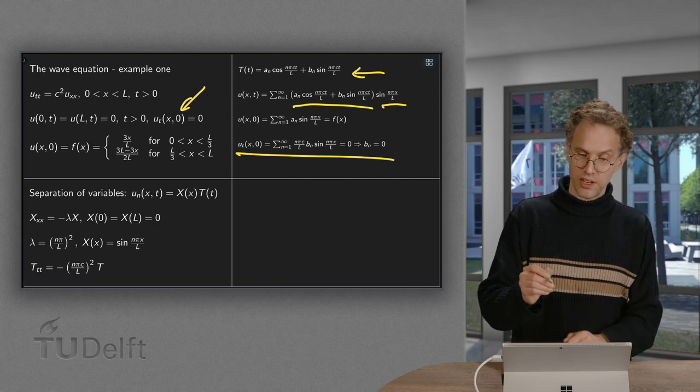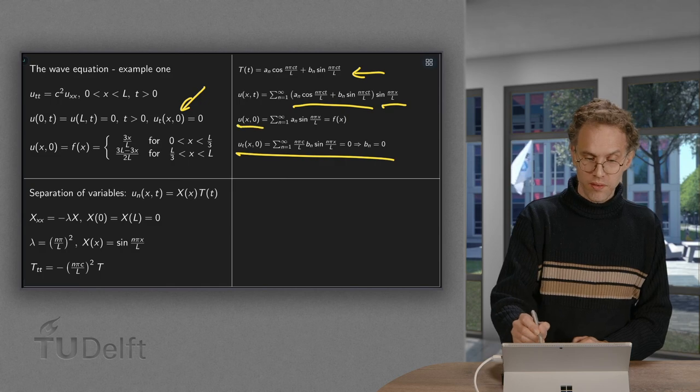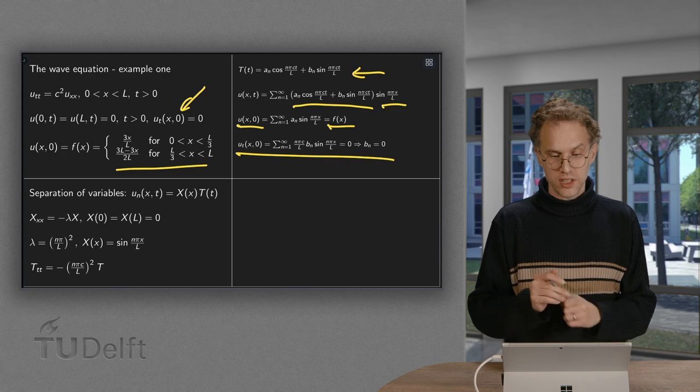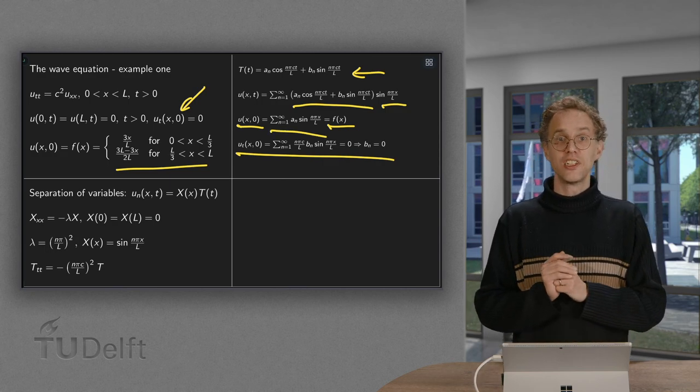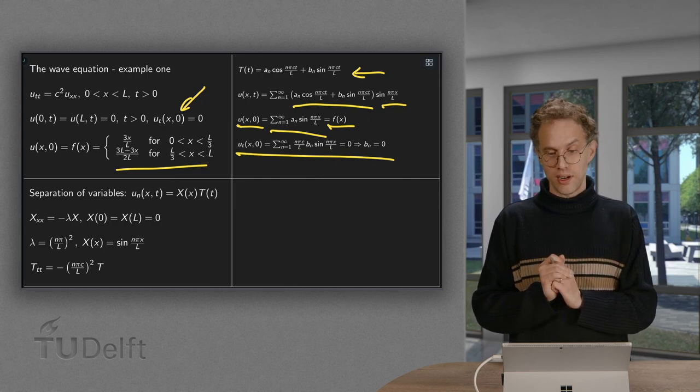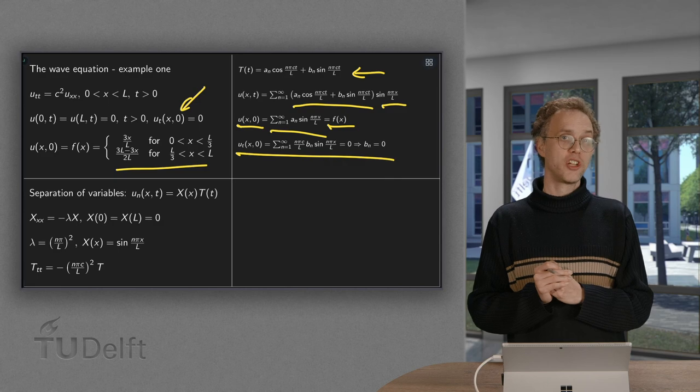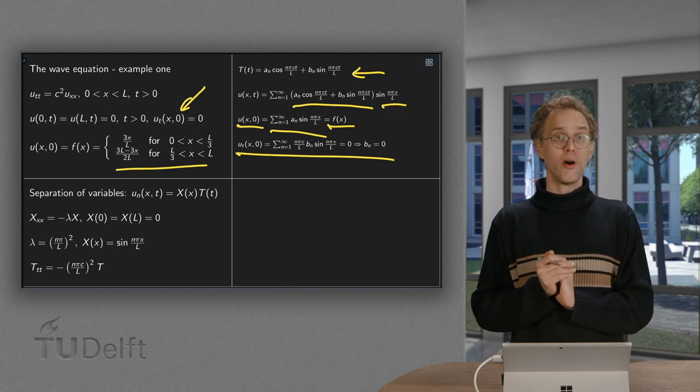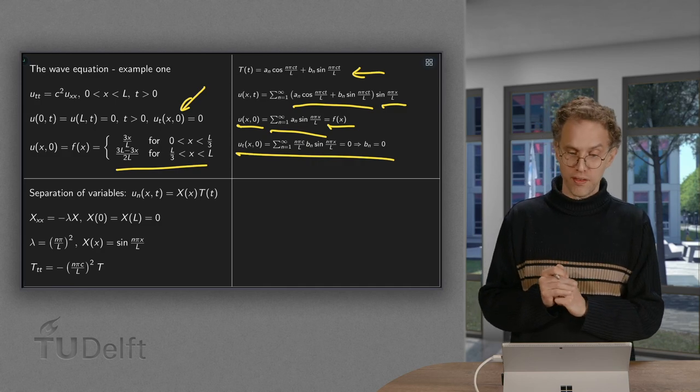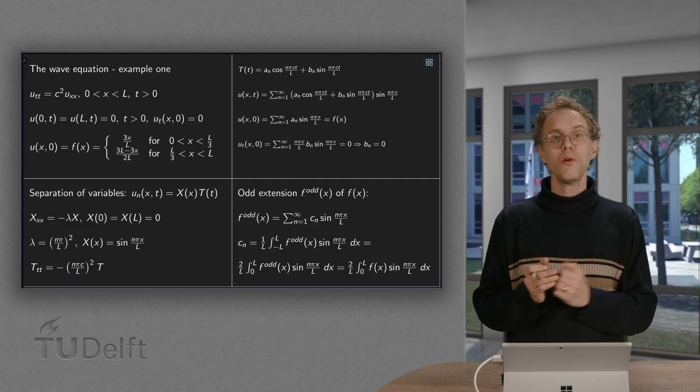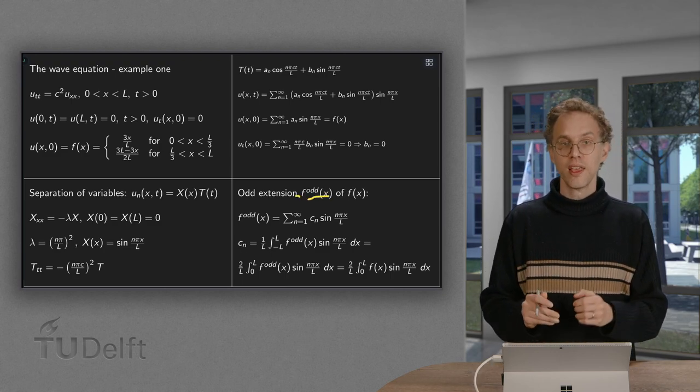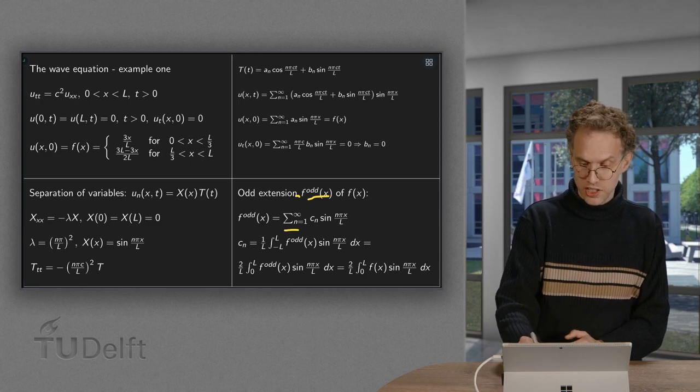For the an, we just plug in time zero. We get our f(x), which is specified over there. And this is the sum over an sine n pi x over L. So that means that we will have to write our f of x as a sum of sines. But we know how to do this. This means that we need a Fourier series of f of x. So what do we do? We only want sines. So we first make the odd extension of f.